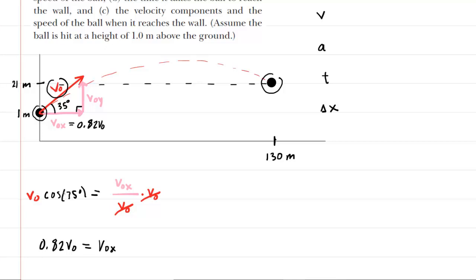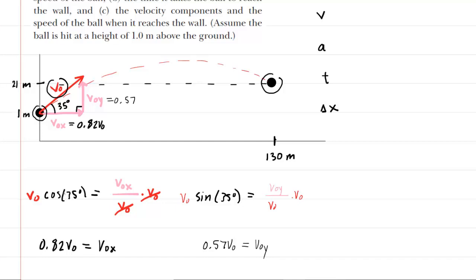For the y-component we'll use the sine function. The sine of the 35-degree angle equals the opposite side — V-naught-y — over the hypotenuse V-naught. Multiplying both sides by V-naught and computing sine of 35 degrees gives about 0.57, so the initial velocity in the y-direction is 0.57 V-naught.